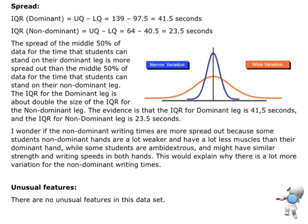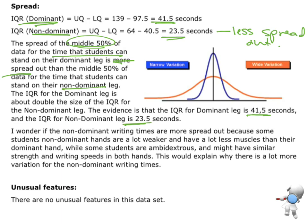Then spread. I've gone and calculated the interquartile range. My interquartile range for the dominant is 41.5. The non-dominant is 23.5. We can see this one here is less spread out than the non-dominant one. So the spread of the middle 50% of data for the time that students can stand on the dominant leg is more spread out than the middle 50% for the time they can stand on their non-dominant leg. Evidence is dominant leg IQR and non-dominant leg IQR. That would be my analysis: shape, center, spread.